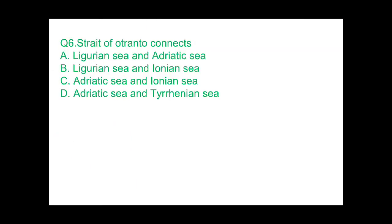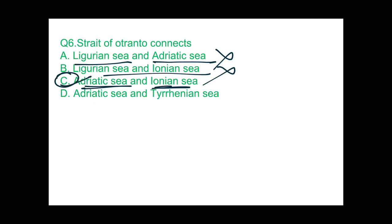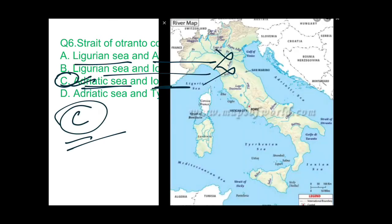Question 6: the Strait of Otranto connects which two seas? Option A — Ligurian Sea and Adriatic Sea: no. Option B — Ligurian Sea and Ionian Sea: no, the Ligurian Sea is not associated with the Strait of Otranto. Option C — Adriatic Sea and Ionian Sea: correct. So option C is the answer. On the map you can see the Adriatic Sea and Ionian Sea connected by the Strait of Otranto.